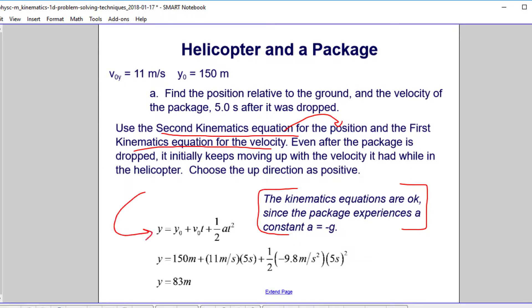So here's second kinematics. We put in our numbers. We start at 150 meters above the ground and upward initial velocity due to the helicopter of 11 meters per second, effective for the 5 seconds that we're looking for. Then we add in the one half a t squared, and a in this case is negative 9.8. We do the math, and since we were talking about reference to the ground, we know the package is now only 83 meters above the ground.